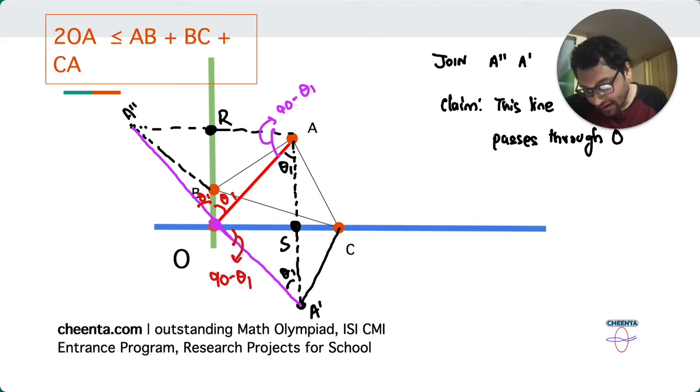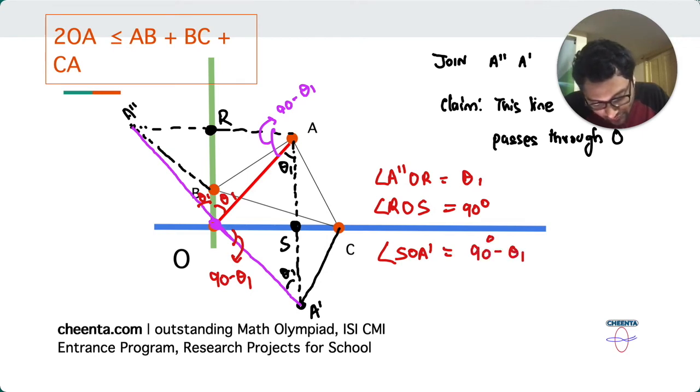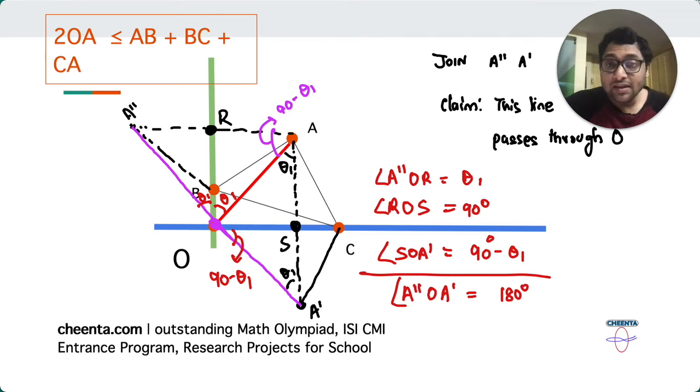So what do we have? Angle A'' OR is theta one. A'' OR is theta one. A'' OR is theta one. Angle ROS is 90 degree. ROS is 90 degree. Two sides are perpendicular to each other. And angle SOA', SOA' is 90 minus theta one. So if you add them up, this becomes a straight angle. So becomes A'' OA' is 180 degree, which means this is a straight line, right? So we have proved that this is a straight line.